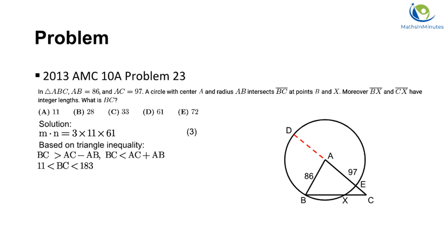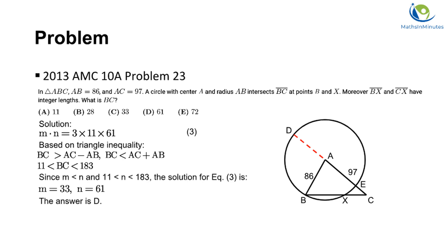Based on the triangle inequality, BC is greater than the absolute difference between AC and AB, and less than their sum. Therefore BC is greater than 11 and less than 183. Given that M is less than N and N must be between 11 and 183, the only possible solution for N is 61. Therefore the length of BC is 61, and the answer is D.